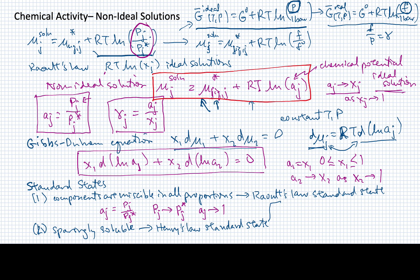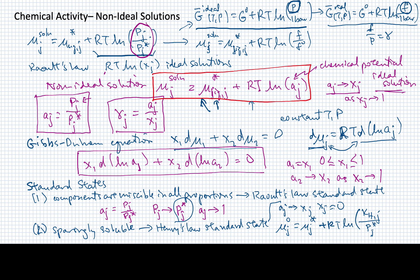In practice, a_j goes to x_j only as x_j goes to zero. We saw in Henry's Law that the slope was not equal to the pure substance vapor pressure but to the Henry's Law constant. So the standard state is redefined as mu-zero equals the chemical potential of the pure liquid plus RT times the log of the Henry's Law constant divided by the pure vapor pressure — substituting the Henry's Law constant instead of the pure vapor pressure, making better sense for solutes that don't dissolve thoroughly in their solvent.